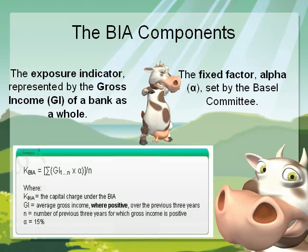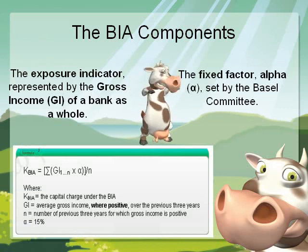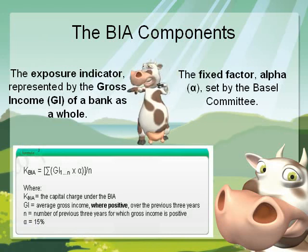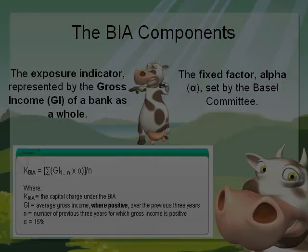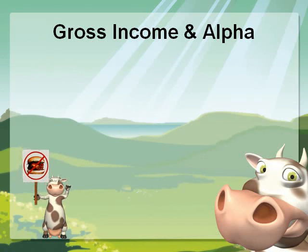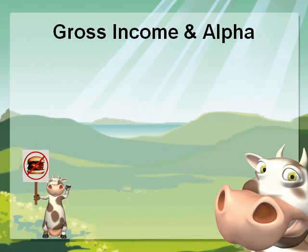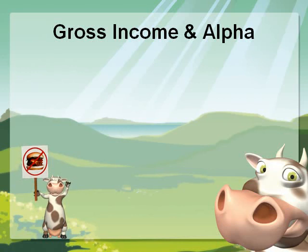Now let's look at the meaning and the rationale of these two components. Gross income is a broad indicator that serves as a proxy for the exposure of the bank to operational risks.